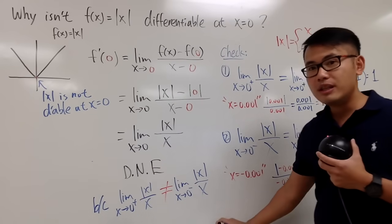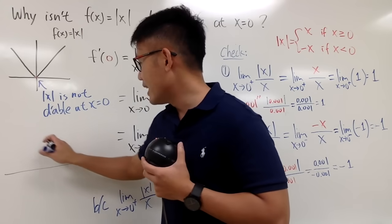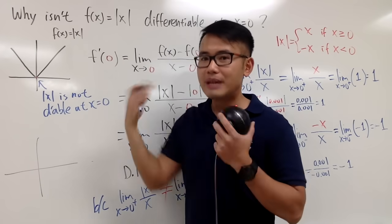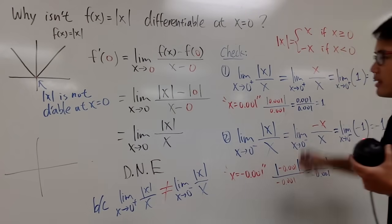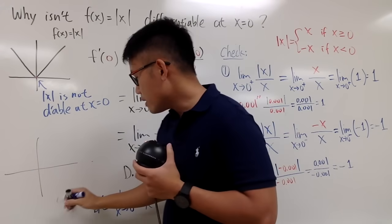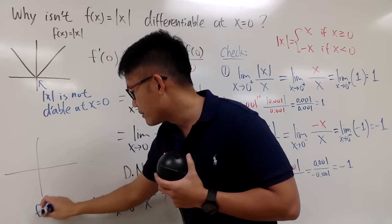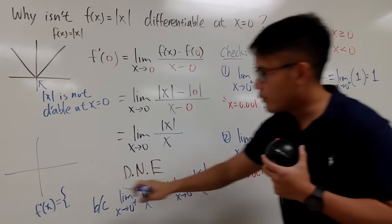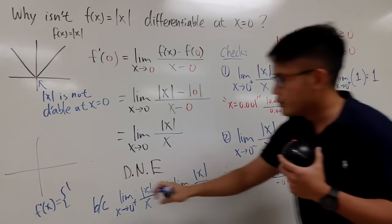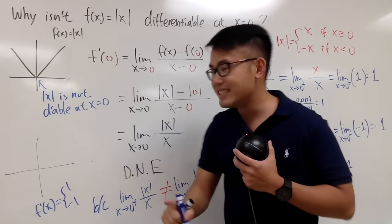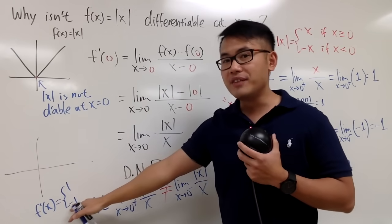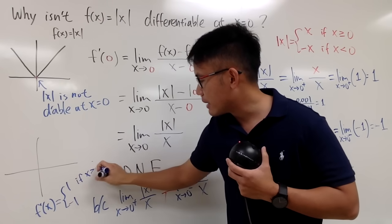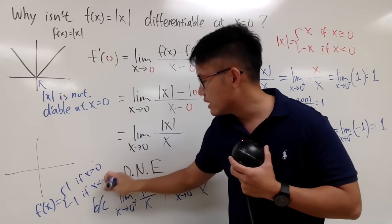Before we go, let me show you that if you would like, you can differentiate absolute value of x by looking at the piecewise function. F prime of x will be: differentiating x gives 1, and differentiating negative x gives negative 1. But the derivative doesn't exist at 0, so this is when x is positive, and this is when x is negative.